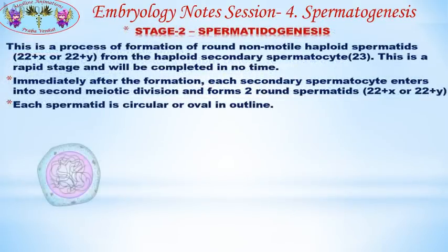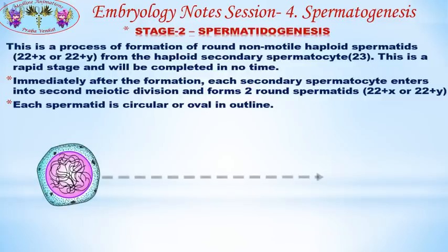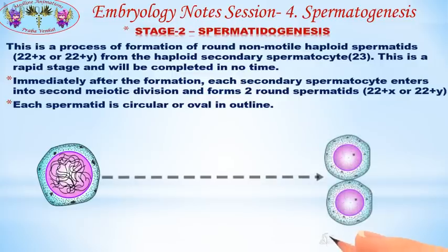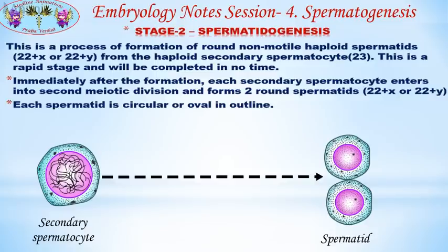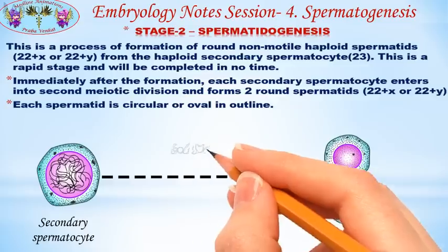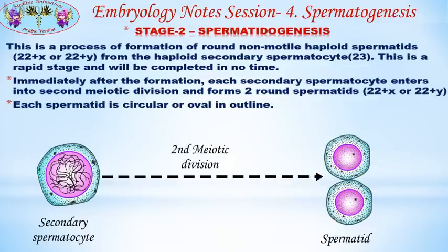Stage 2 is spermatidogenesis — the process of formation of round non-motile haploid spermatids from the haploid secondary spermatocytes. This is a rapid stage completed in a very short time. Immediately after formation, each secondary spermatocyte enters the second meiotic division and forms two round spermatids. Each spermatid is circular or oval in outline.